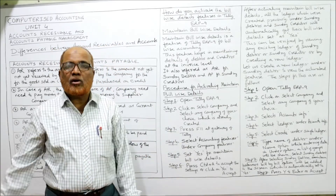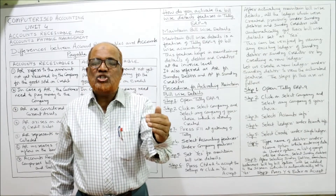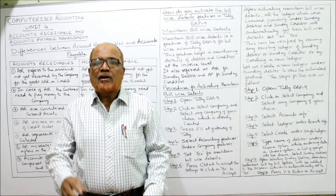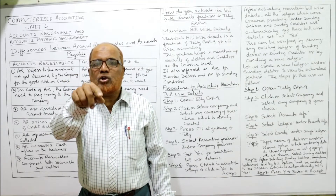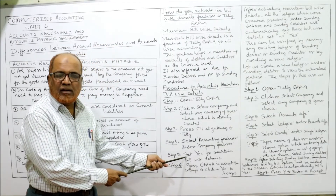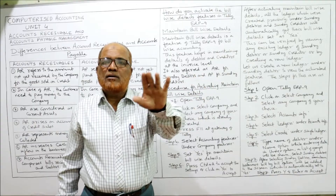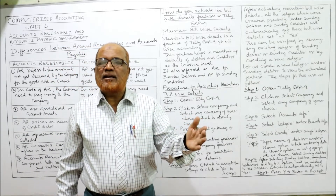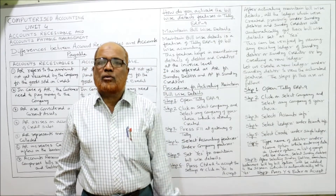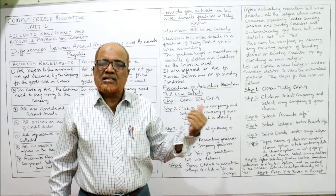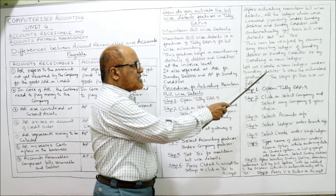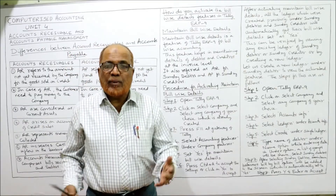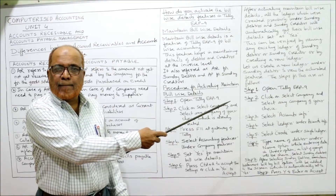You can verify by viewing any existing ledger of sundry debtors or sundry creditors, or by creating a new ledger. Let us create a new ledger account under sundry debtors to view the activated feature and confirm whether it is definitely activated.